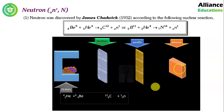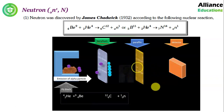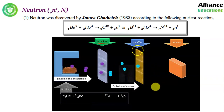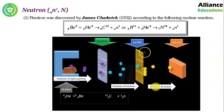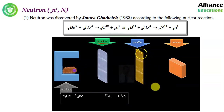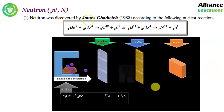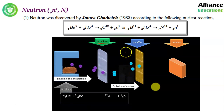So what James Chadwick did was he placed a paraffin sheet in front of the detector. Why paraffin? Because it is rich in positively charged particles — means it is rich in protons. So James Chadwick placed the paraffin sheet there.